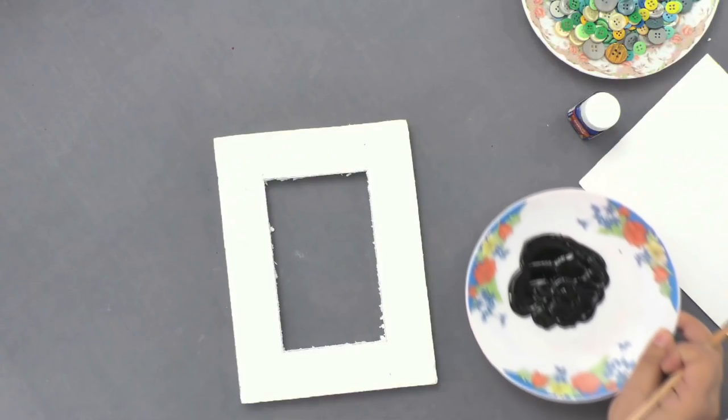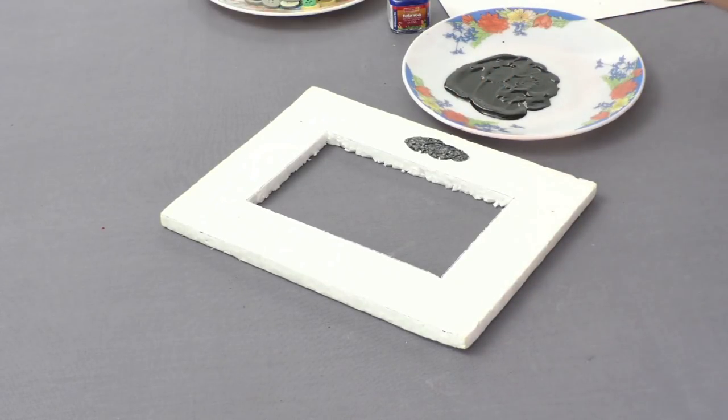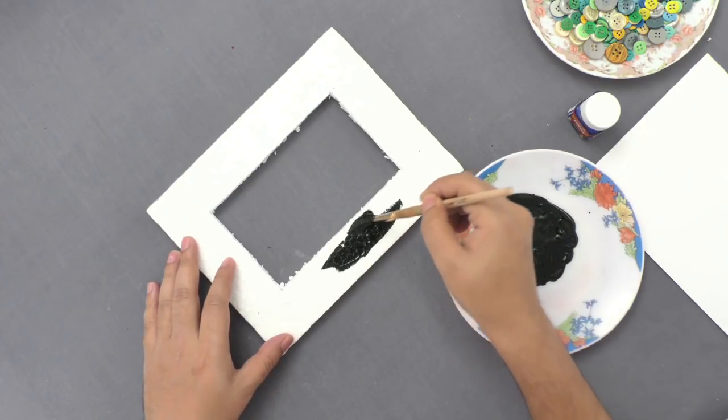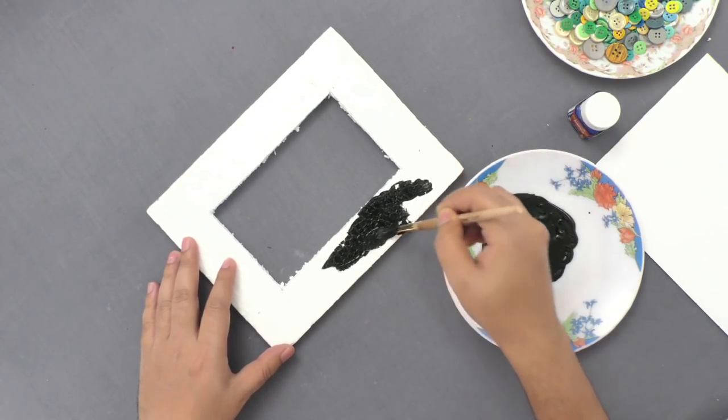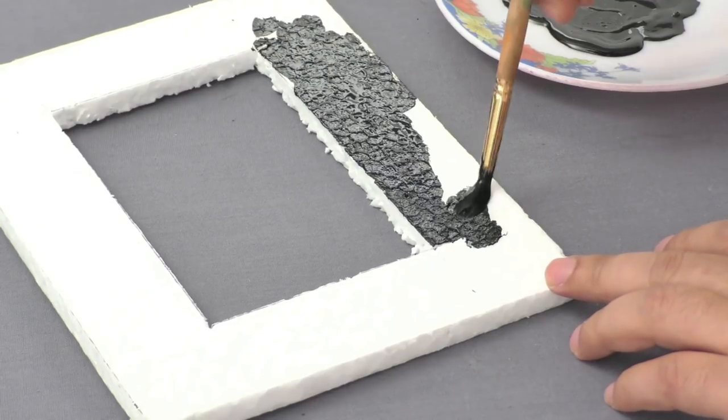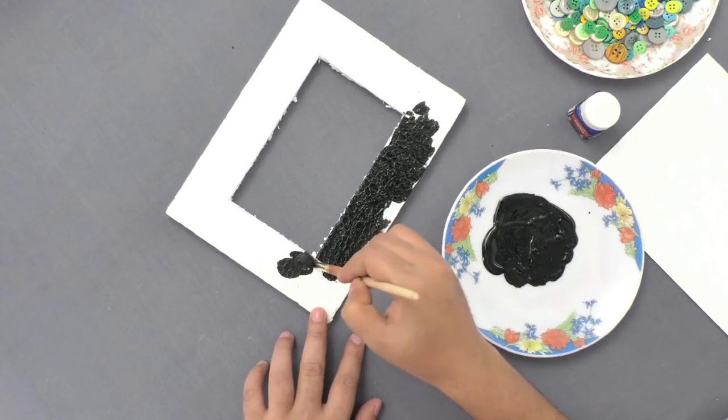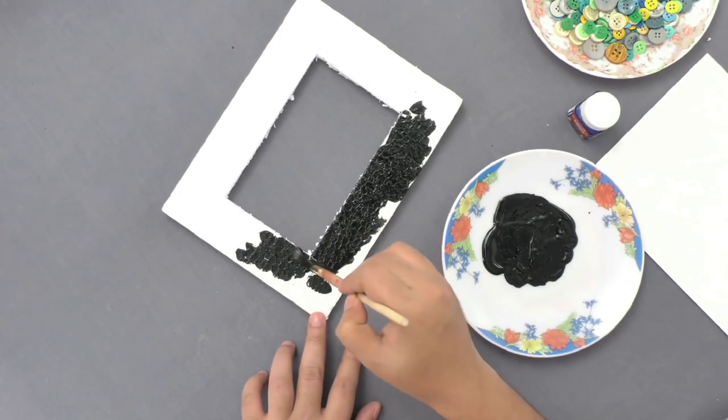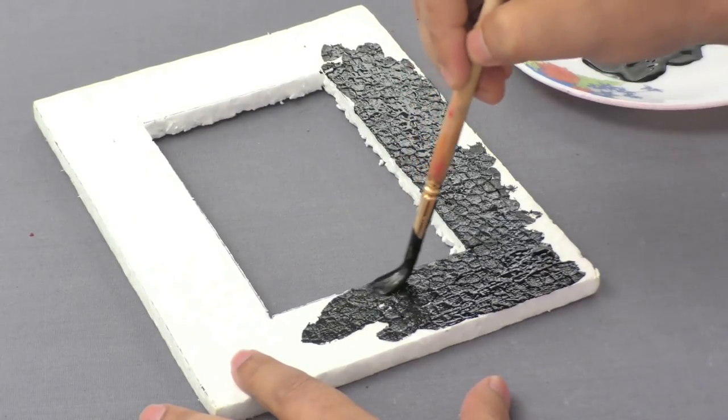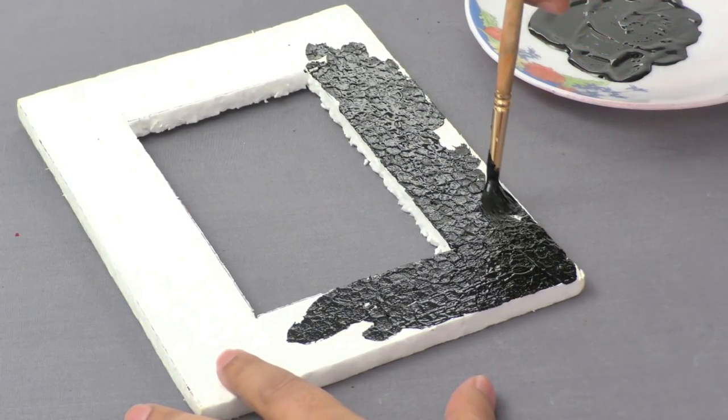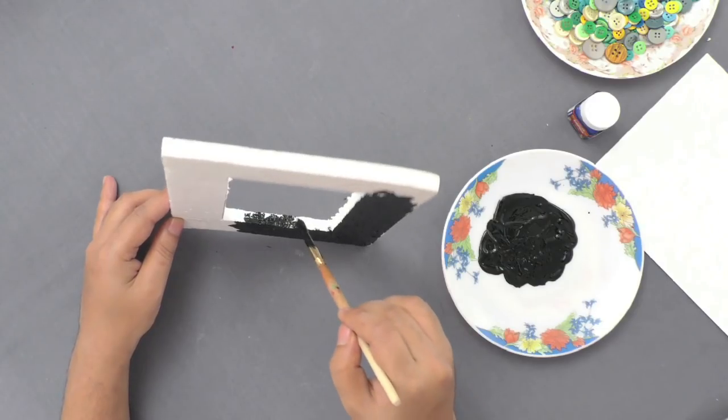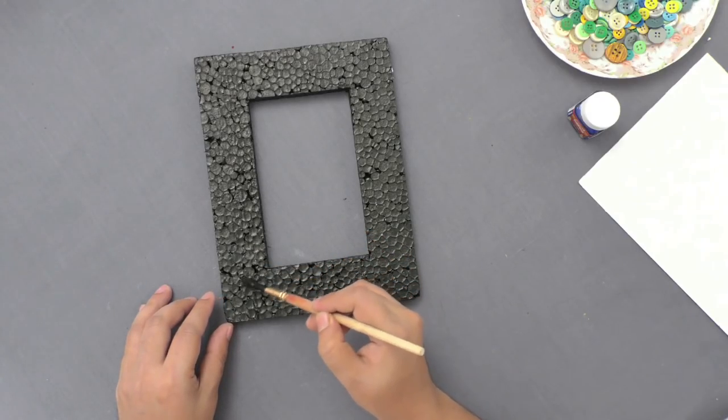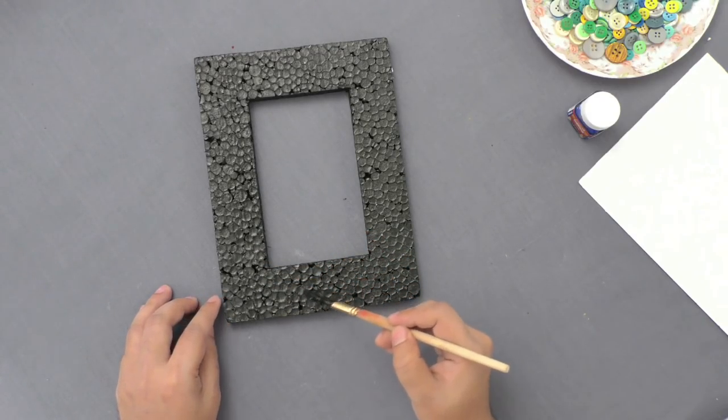Now, take some black fabric paint and paint both sides of the frame, making sure it is well covered.